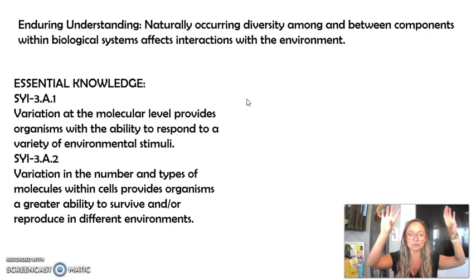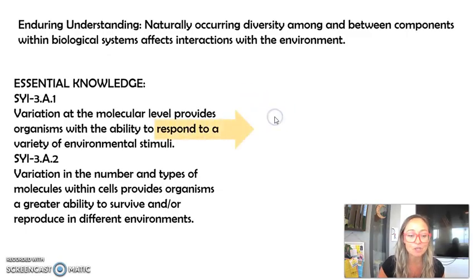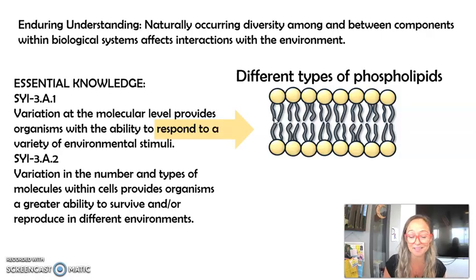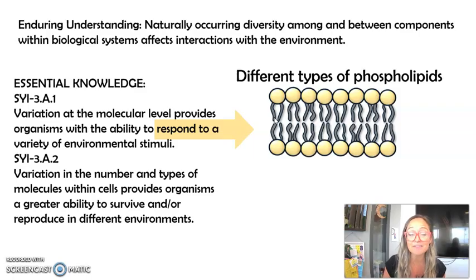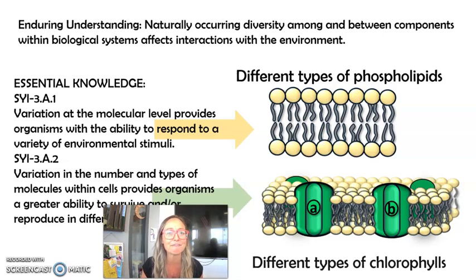In that enduring understanding, the essential knowledge we need to know is that variation at the molecular level provides organisms with the ability to respond to a variety of environmental stimuli. The example we're going to use is the cell membrane and how certain organisms can respond to different temperatures in their environment and change the composition of their phospholipid bilayer. The second part is that variation in the number and types of molecules within cells provides organisms a greater ability to survive and/or reproduce in different environments. We just learned about cell respiration and photosynthesis, so we're going to focus on the different types of chlorophyll within the photosystems.